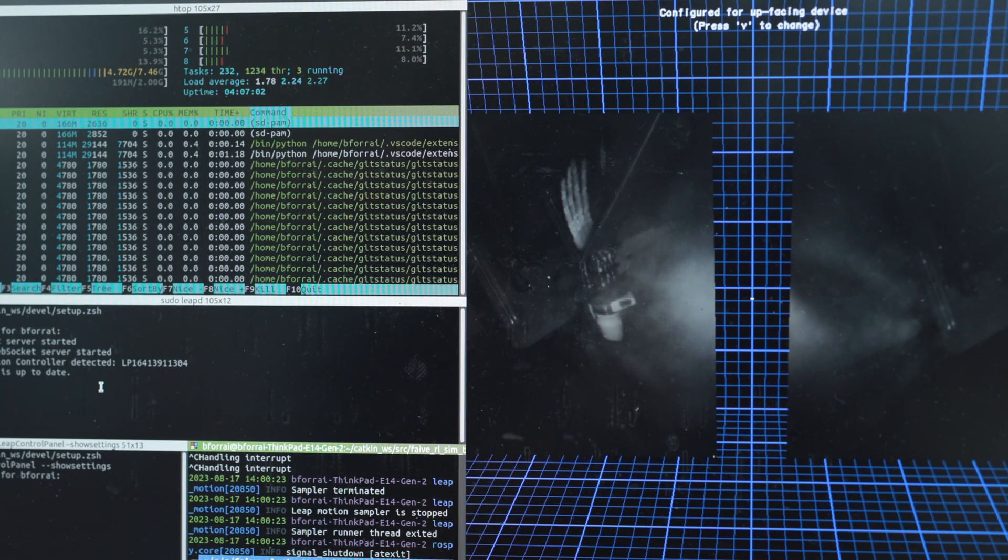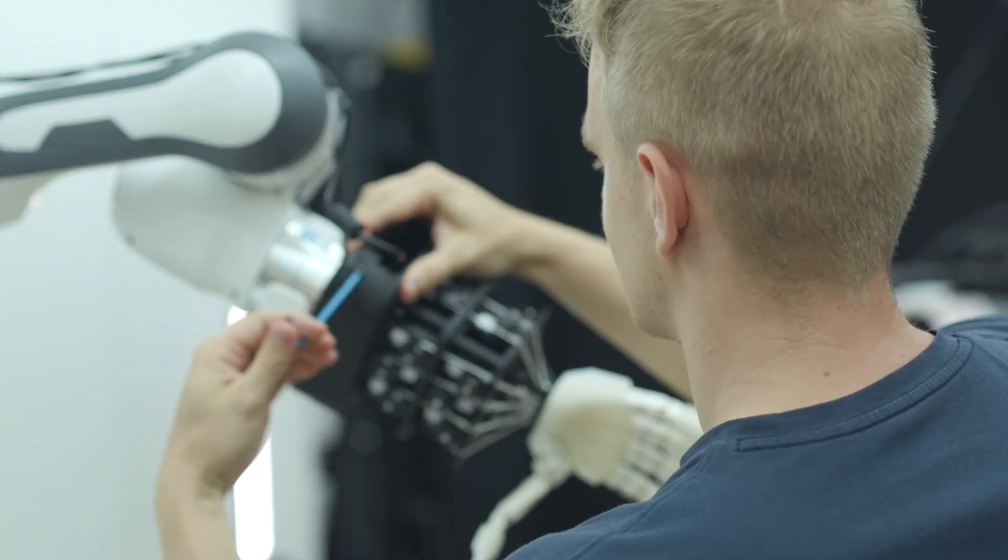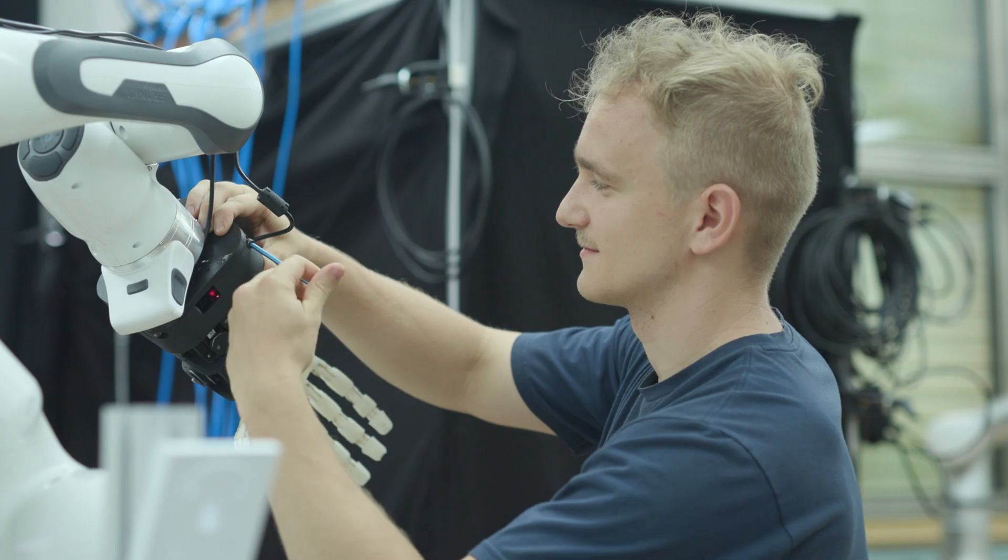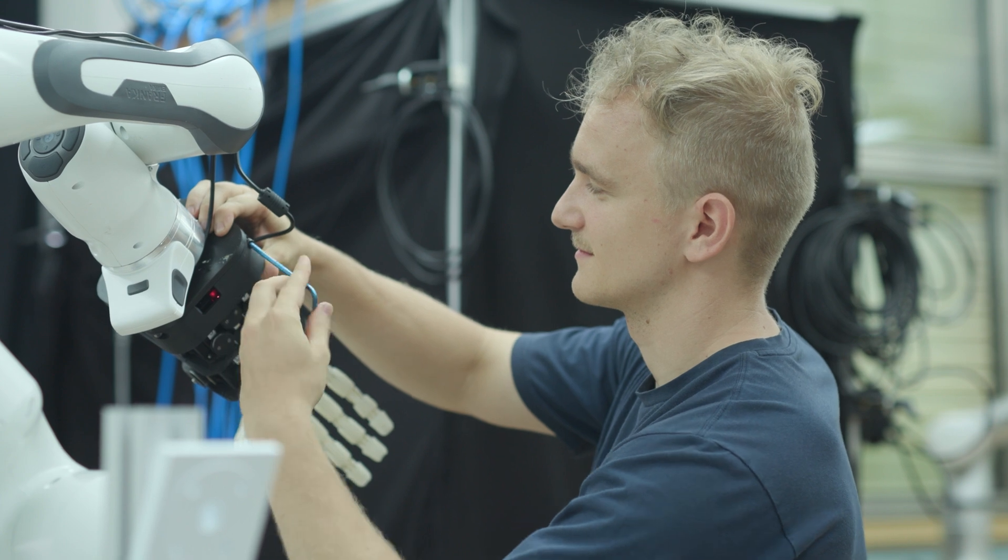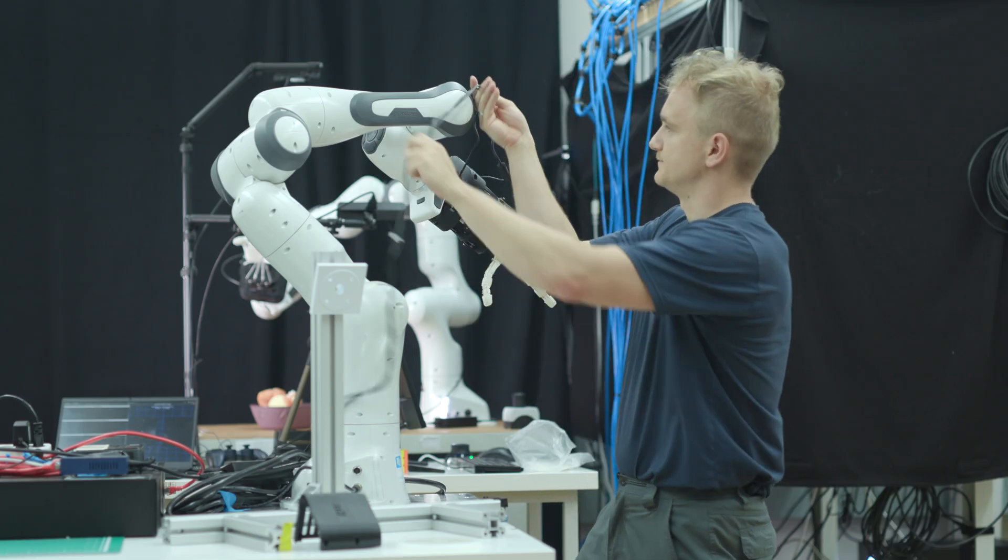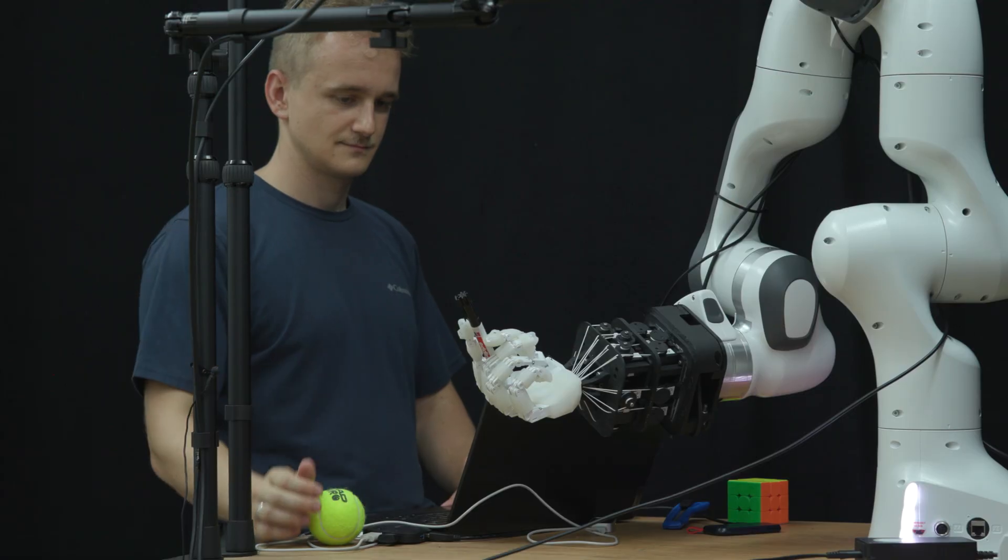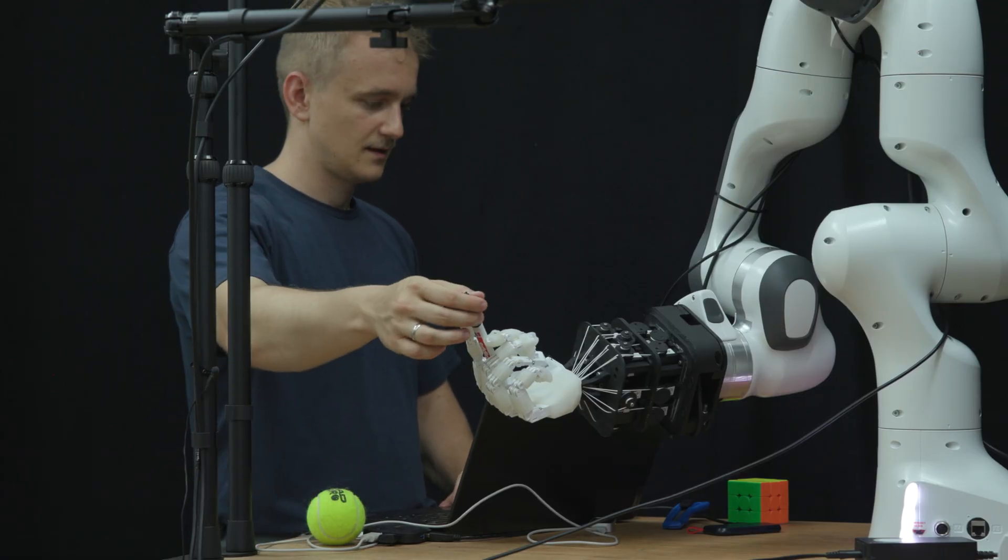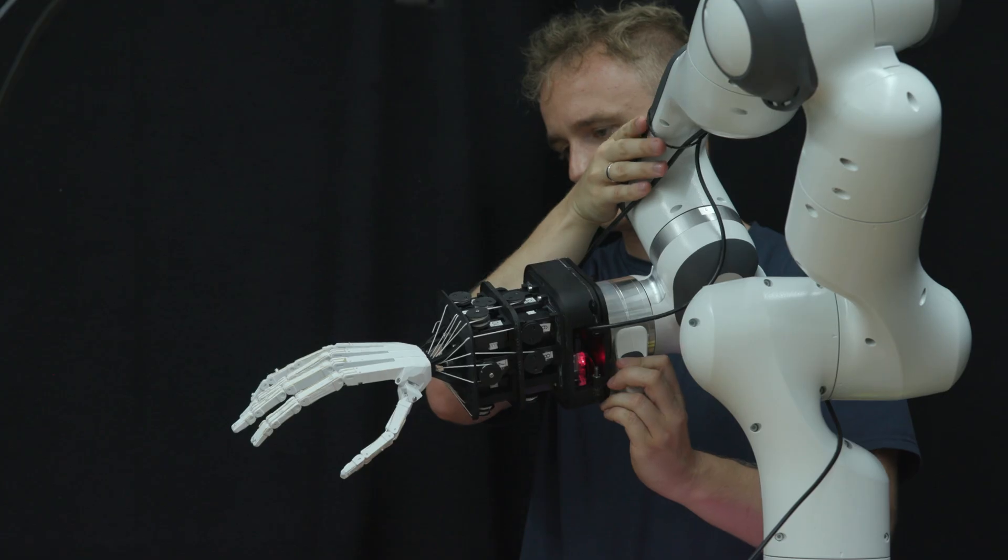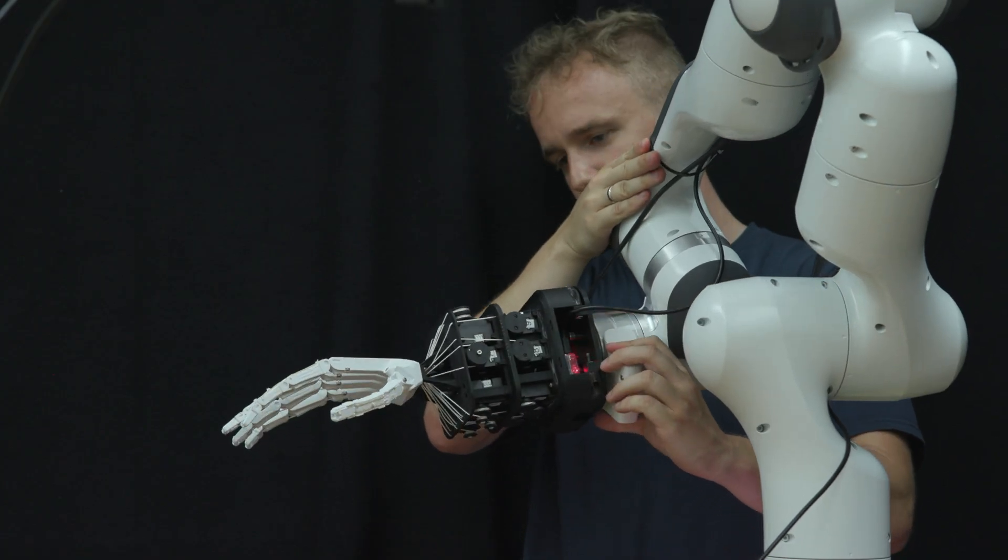In conclusion, crafting a functional and dexterous soft robotic hand requires meticulous consideration of components and design choices. Emulating the human hand's principles while adapting them for a robotic context leads to a versatile and capable creation.